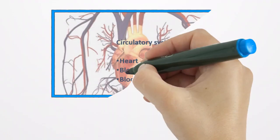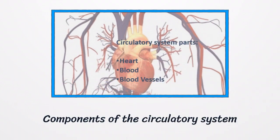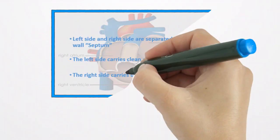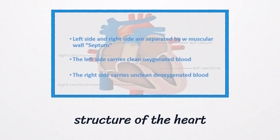So what organs or parts are found in this system? The circulatory system is composed of heart, blood and blood vessels. Our heart is a muscular organ that is composed of four rooms or chambers. The two upper rooms are called atria, while the two lower ones are called ventricles.